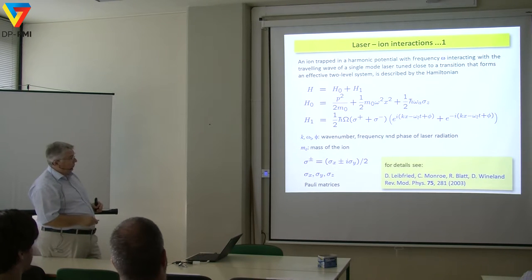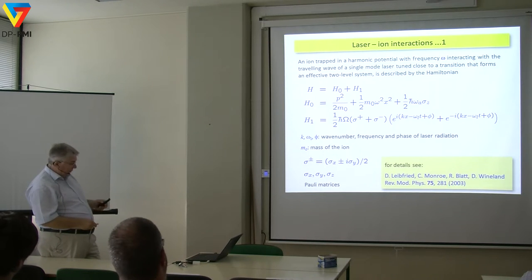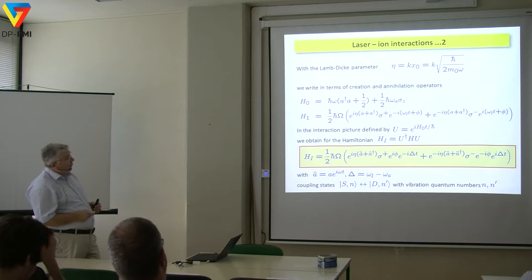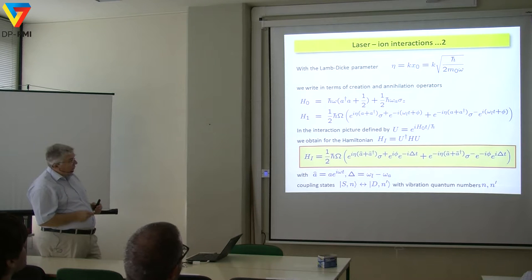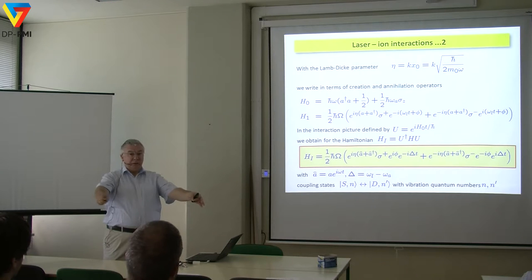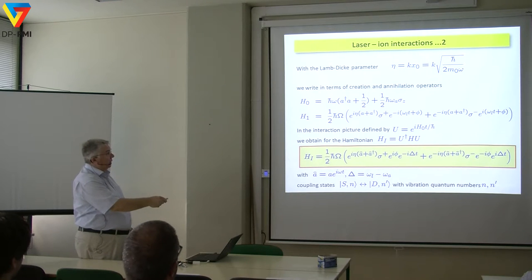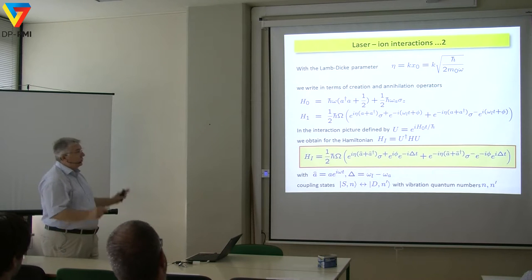There is a very important parameter called the Lamb-Dicke parameter. It's the extension of the ion wave packet in the ground state of the harmonic oscillator — x0 is given by h-bar over 2m-omega-0 — multiplied by the wavenumber of the incoming radiation. For one megahertz secular frequency in calcium, the extension of the ground state wave packet is about 7 nanometers, and the wavelength is roughly 700 nanometers, so eta is about 1% — that's typically the Lamb-Dicke parameter.